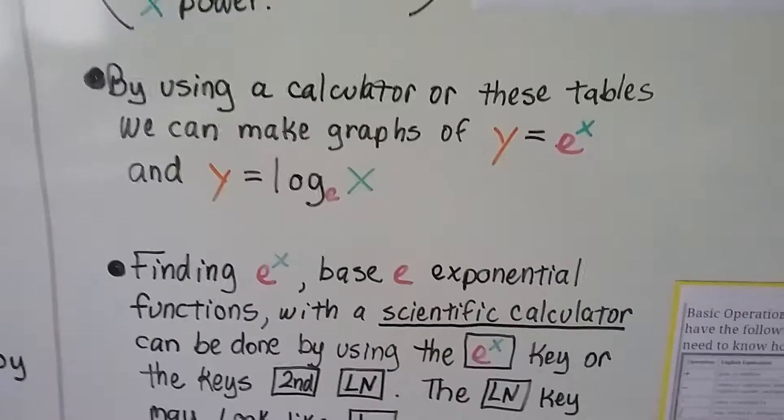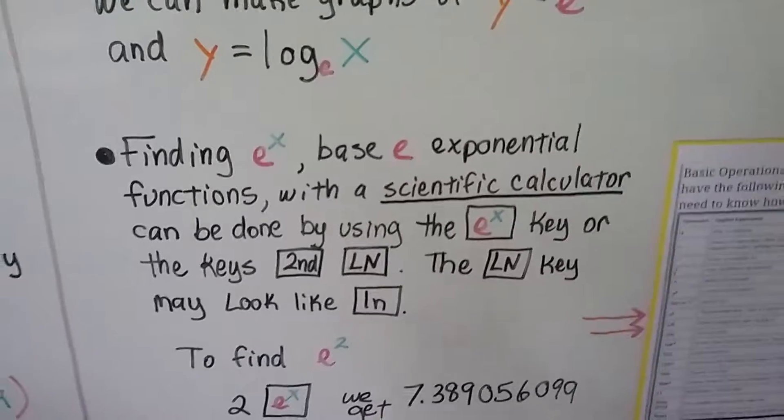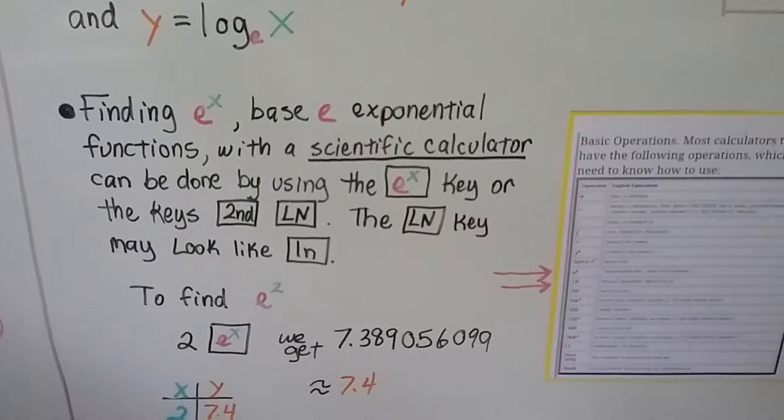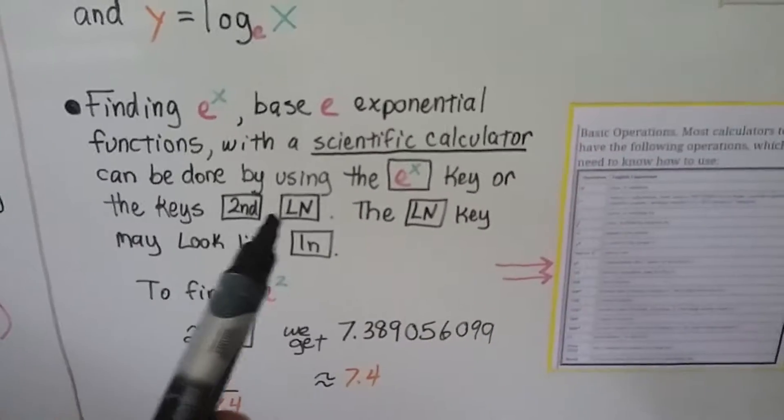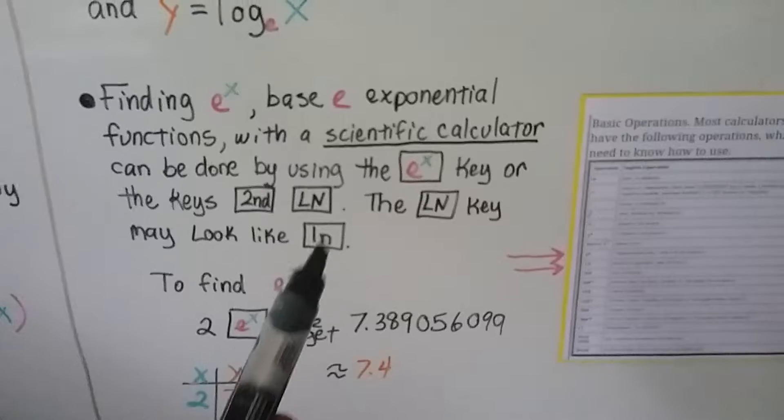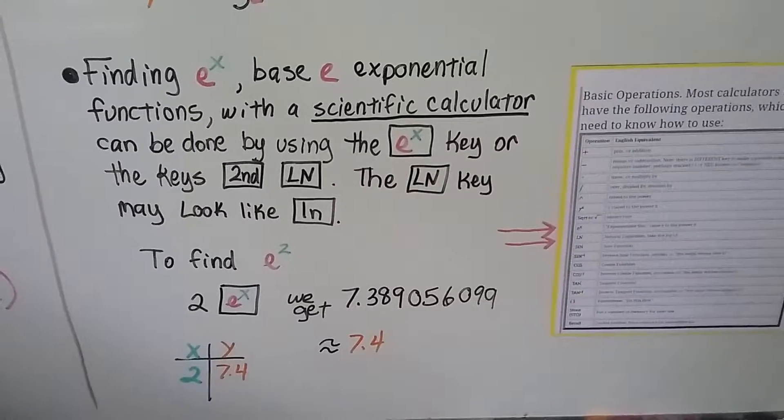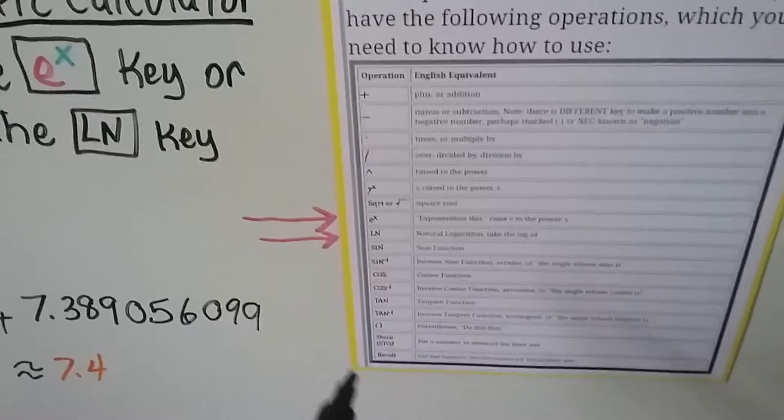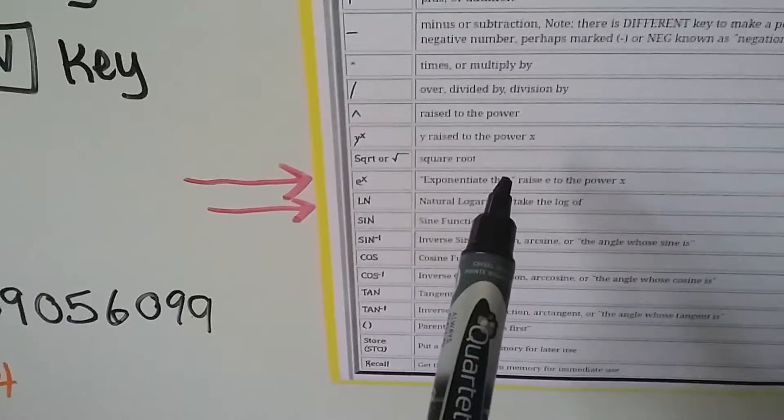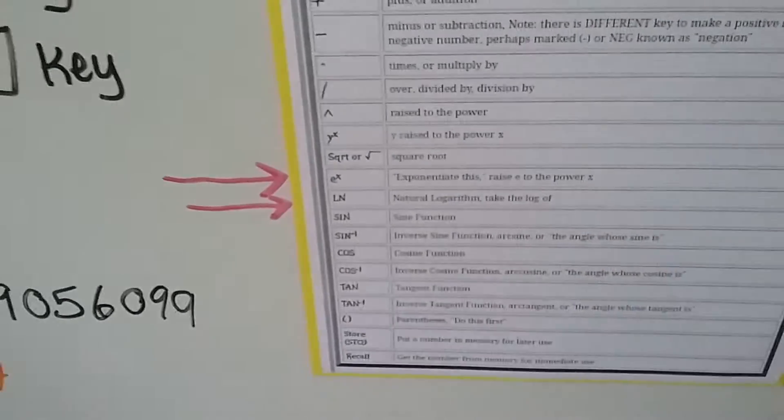By using a calculator or these tables, we can make graphs of y equals e to the x and y equals log base e of x. Using a scientific calculator, base e exponential functions can be done using the e to the x key, or the key second ln. The ln key may look like an in, but it's really an n - a lowercase l. If you don't see this uppercase l, it could look like this with a lowercase l. You can go online or look in your instruction manual for your scientific calculator, and it'll tell you that the e to the x means exponentiate this, raise e to the power of x, and that ln key means natural logarithm, take the log of.